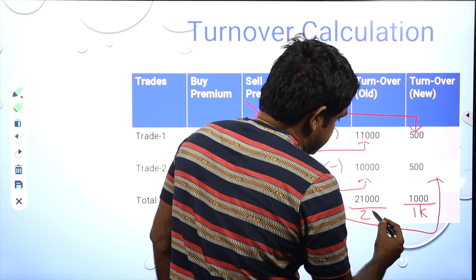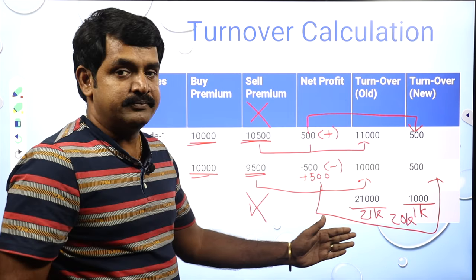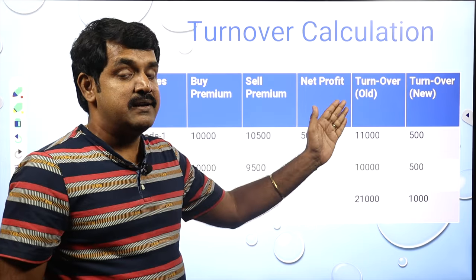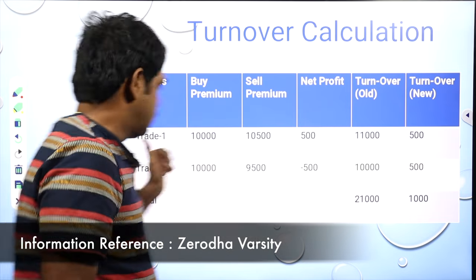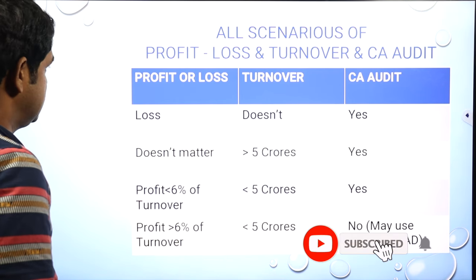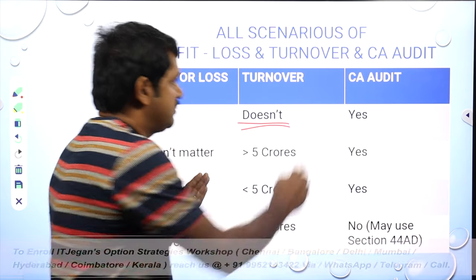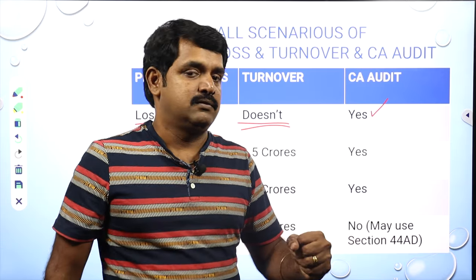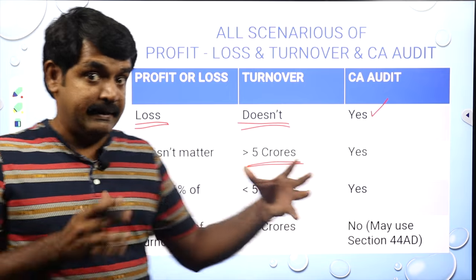By old method the turnover is 21,000 rupees; by new method it is 1,000 rupees — you are saving 20,000 in turnover. As I said, turnover is calculated mainly to identify whether you need to do a tax audit or not. So if you are making a loss, it does not matter how much turnover you have — you have to get a CA to certify that your loss is valid.